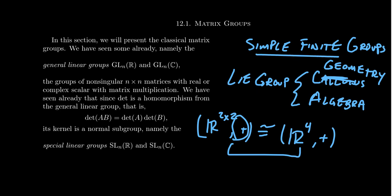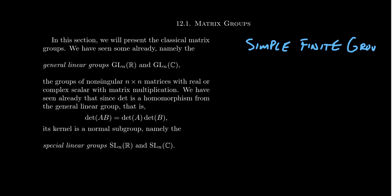The simple finite groups — with the exception of cyclic groups, alternating groups, and the sporadic groups — every other simple finite group is of Lie type, meaning it's a finite group analog of these differentiable Lie groups. In some regard, the finite simple groups behave like subgroups of the general linear group for finite analogs — for example, putting a finite field in for the scalars, leading to things like projective special linear groups. The general linear groups are pretty important in this classification.